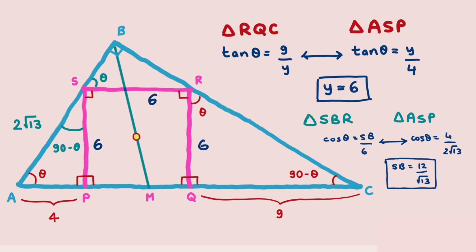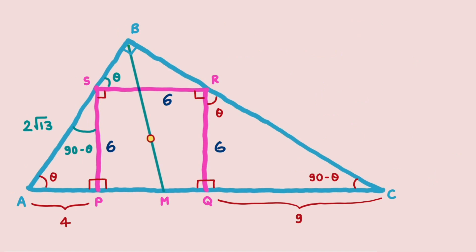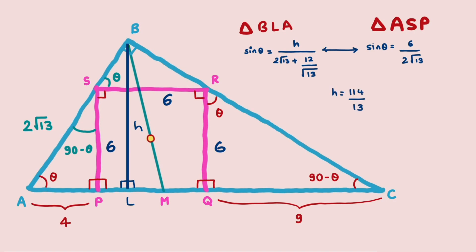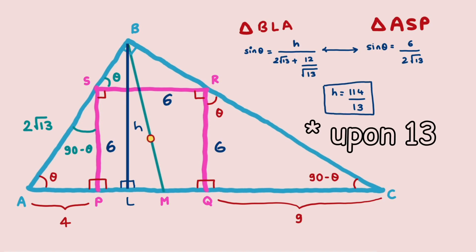We draw a perpendicular from point B to the hypotenuse AC and call the intersection point L. We let BL = H, and our goal is to find H. Taking triangle BLA and triangle ASP: in triangle BLA, sin theta = H/(2√13 + 12/√13), and in triangle ASP, sin theta = 6/(2√13). Comparing these two equations gives H = 114/13.